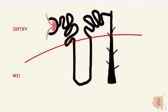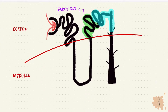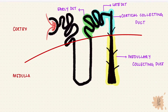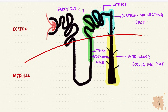Functionally, we can look at it in three parts: the early distal tubule, the late distal tubule and the cortical collecting duct, and the medullary collecting duct. So let's start with the early DCT. This portion is continuous with the loop of Henle, so it's similar to the thick ascending limb of the loop of Henle.